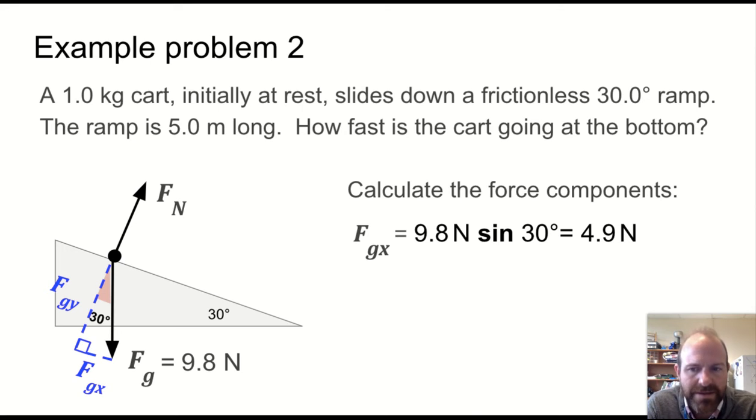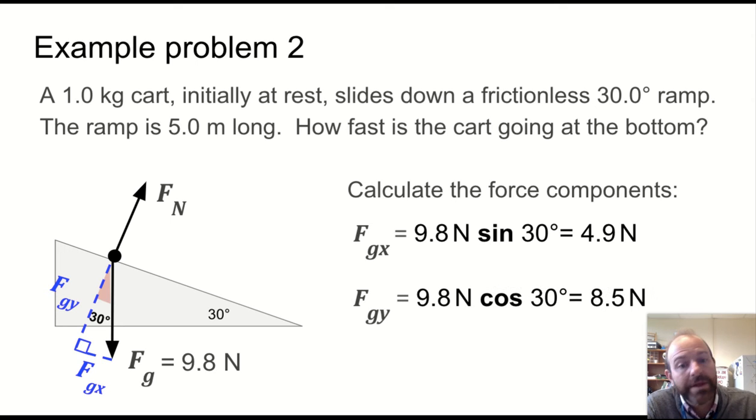But if that is true, then the x component, the component along the ramp, is fg sine theta, or in this case, 9.8 newtons times the sine of 30 degrees, which gives us about 5 newtons. We can also find the y component, which is about 8.5 newtons. We don't really need that right now, but we can certainly calculate it.